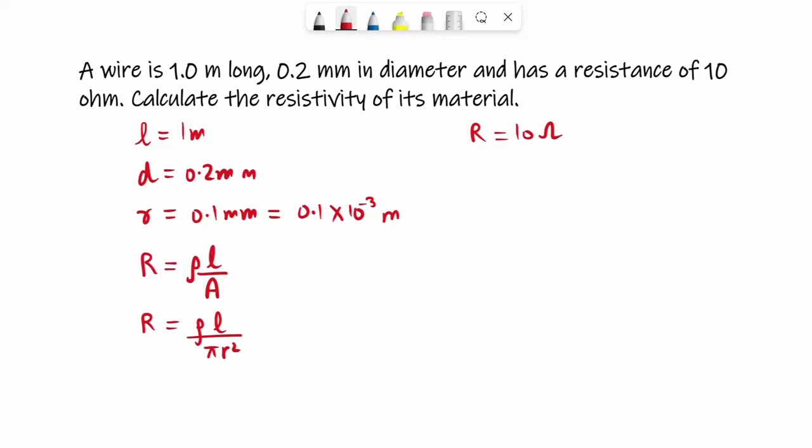Now put the value of r in it, small r in it, L in it, π in it, so that you can find the value of ρ. So ρ is nothing but R × πr² / L. I have interchanged the places of it because I have to find ρ, not R, right?